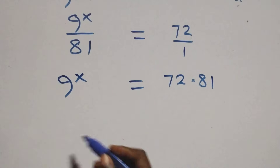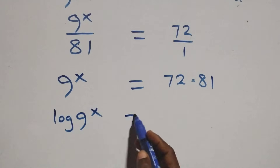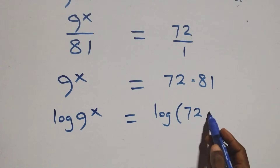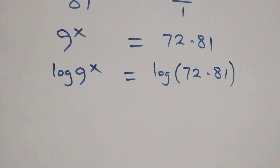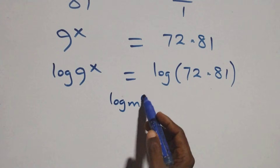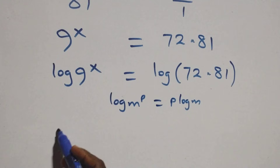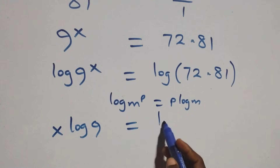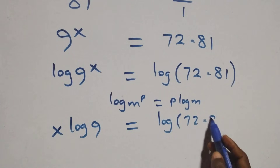From here we take the log on both sides. We have log of 9 raised to power x equals log of 72 times 81. The next step we apply the power rule of logs: log n raised to power p is the same as p log n. So we have x log 9 equals log of 72 times 81.